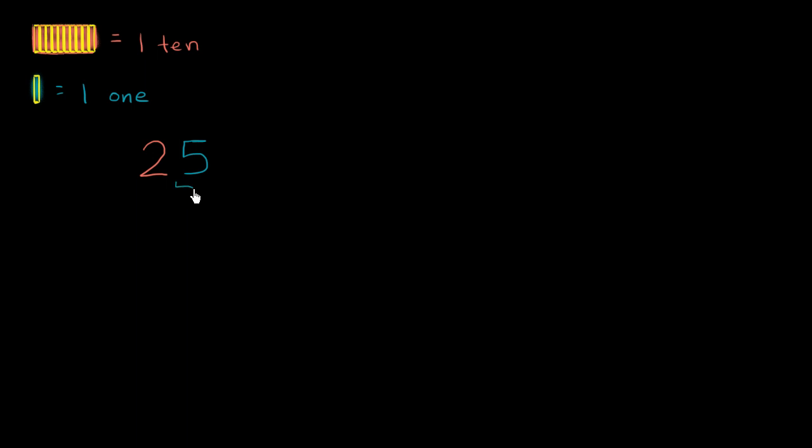Well, the five here is in the ones place, so it literally represents five ones. And this two right over here is in the tens place. That's the tens place, that's the ones place. So this represents two tens.